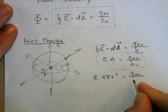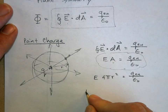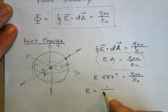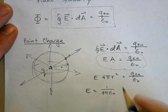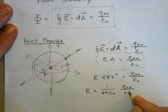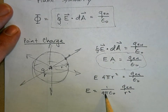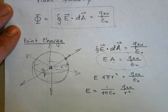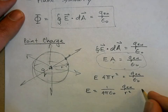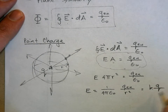The area here is just the area of a sphere: 4πr², where r is the distance away from the center. That equals q enclosed over epsilon naught. Solving for e: e equals (1 over 4π epsilon naught) times q enclosed over r². And 1 over 4π epsilon naught is just the electric constant k, giving us kq over r² — the electric field we already knew from Coulomb's law.